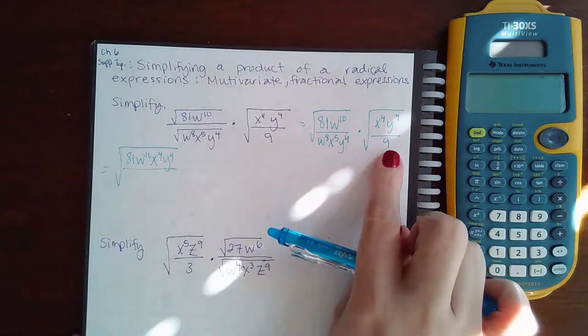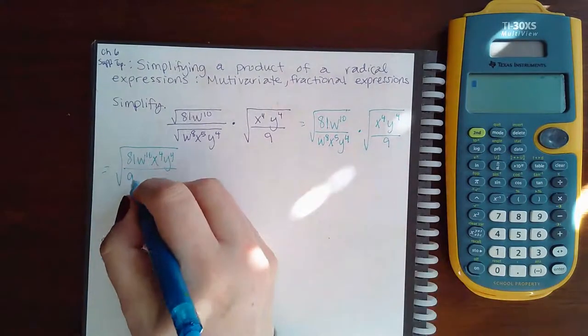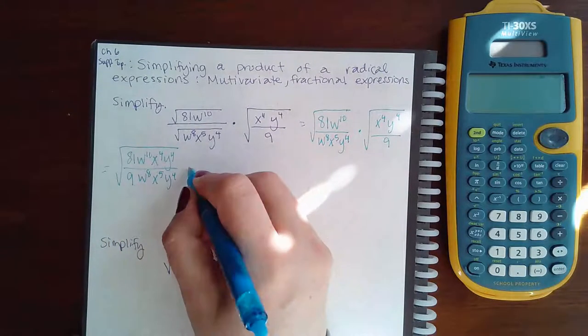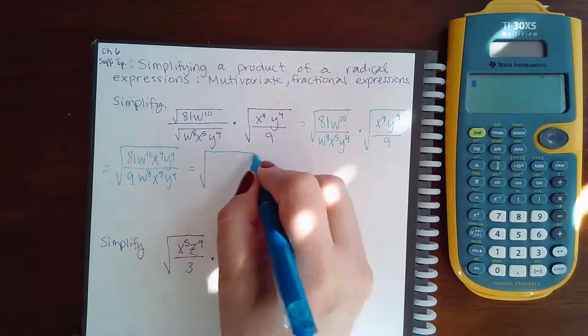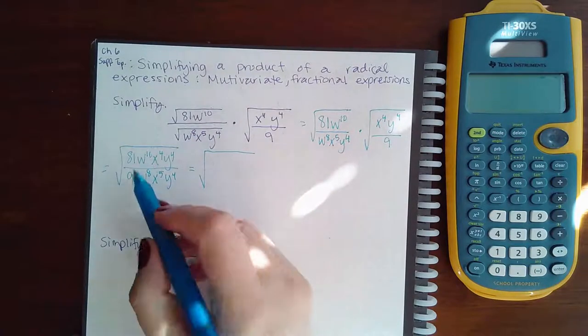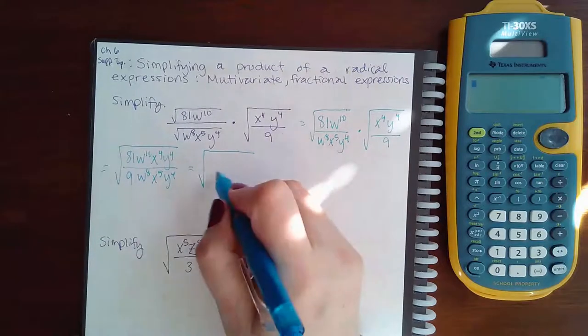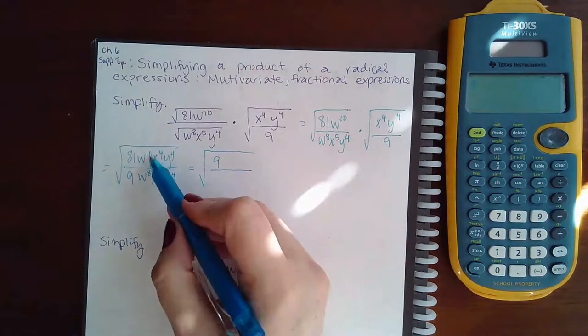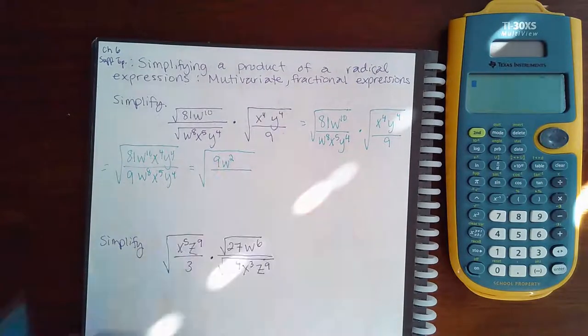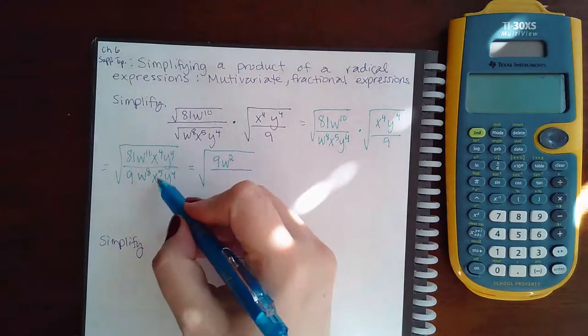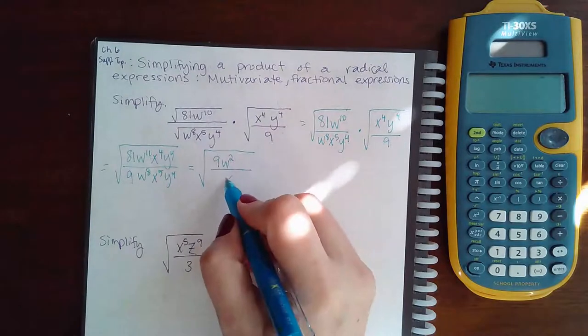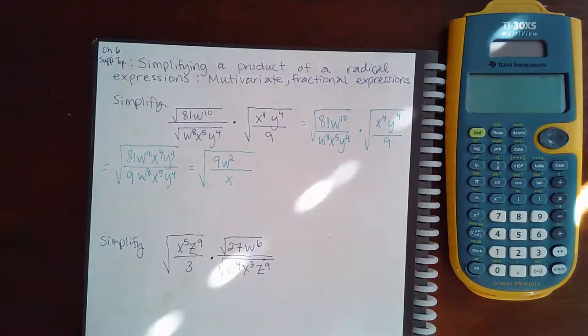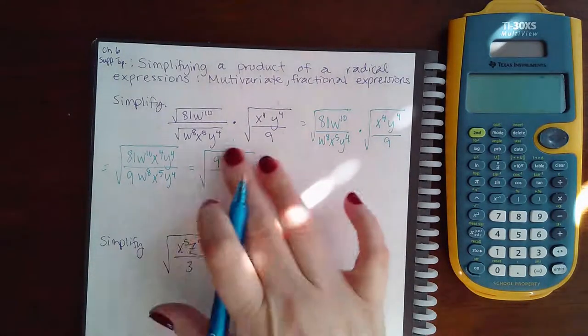I'm going to put the nine in the front because we always like to have the number in the front. Then we'll simplify what's inside here. So 81 divided by 9 will give me 9 on top, w to the 10 divided by w to the 8 will give me w squared, x to the 4 and x to the 5 will still have an x over downstairs, and y to the 4 and y to the 4 will completely cancel out.